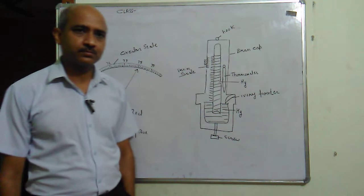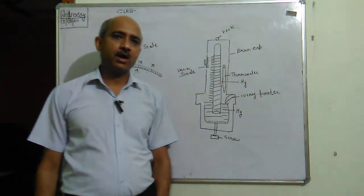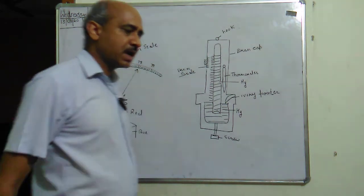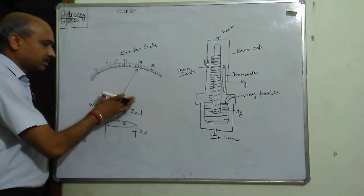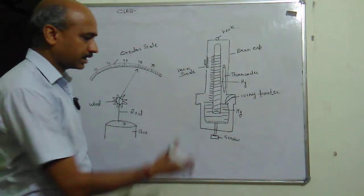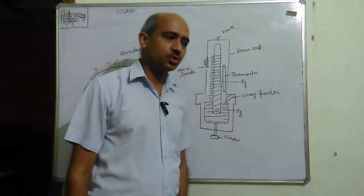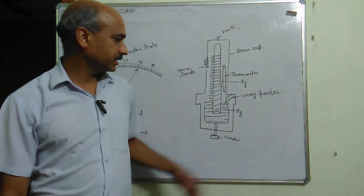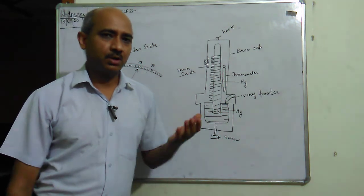Okay, hello everyone. Today we have to discuss the Fortin barometer and the aneroid barometer. I've already made the diagrams here. First of all, why we have constructed this Fortin barometer? Because there are some demerits of the simple barometer.